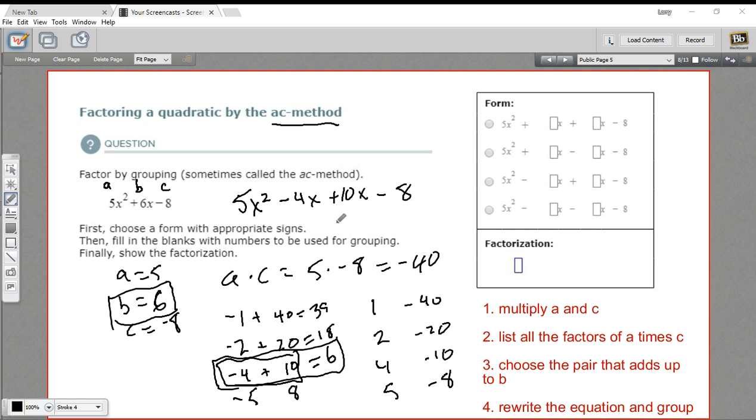The reason we do that is because then we can group and factor by grouping. So let's just take this chunk together and this chunk together and see if we can factor anything out. In the first one, you can factor out an X. So in that case, we'd get 5X minus 4.